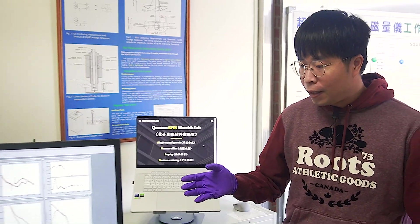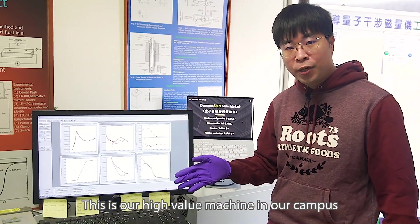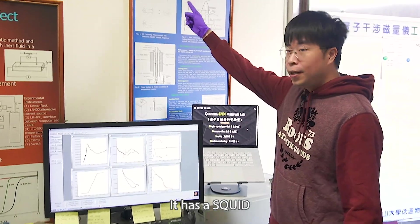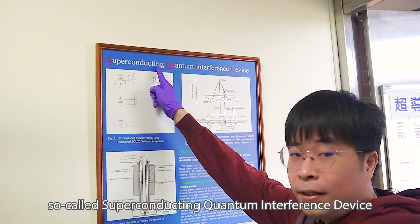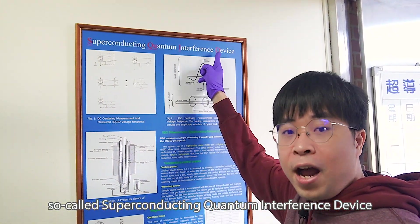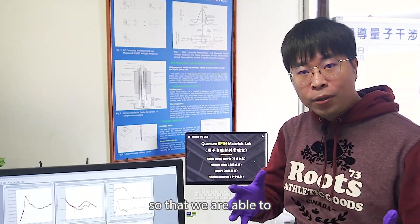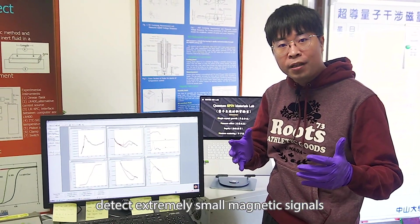This is our high field machine on our campus. It has a SQUID, a superconducting quantum interference device, so that we are able to detect extremely small magnetic signals.